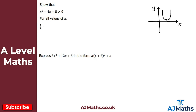So let's complete the square on this quadratic. This is going to be (x minus 2) squared — we take the coefficient of x, halve it to get minus 2, square the bracket, and subtract that value squared, so minus 2 squared is 4, meaning we subtract 4. Then we have the plus 8. Cleaning this up, we get (x minus 2)² minus 4 plus 8, which gives us positive 4.